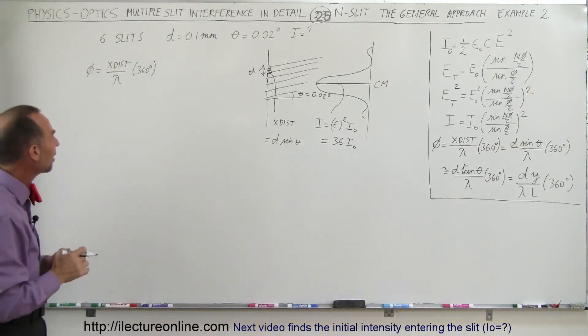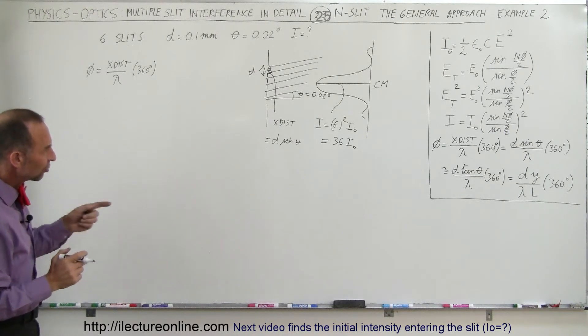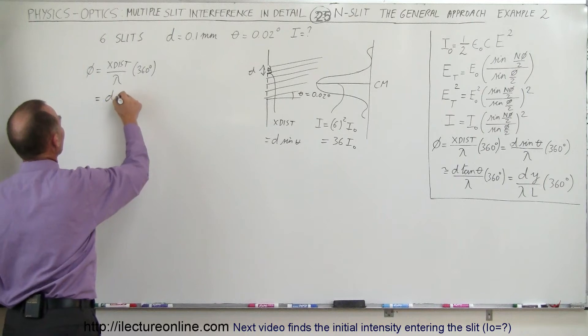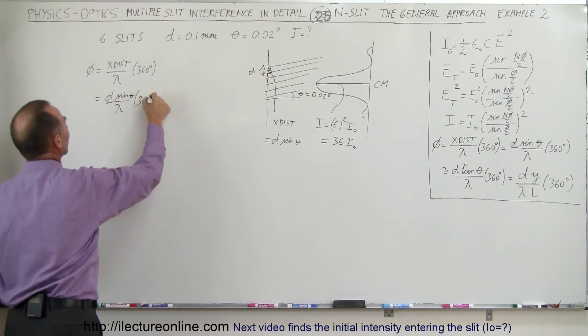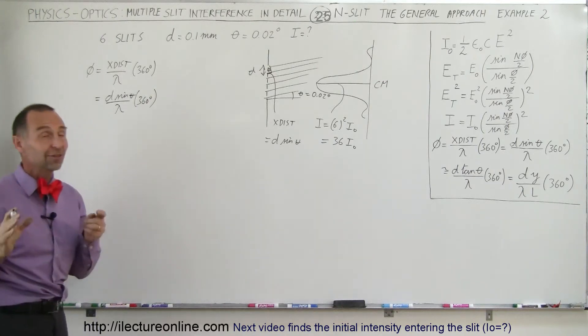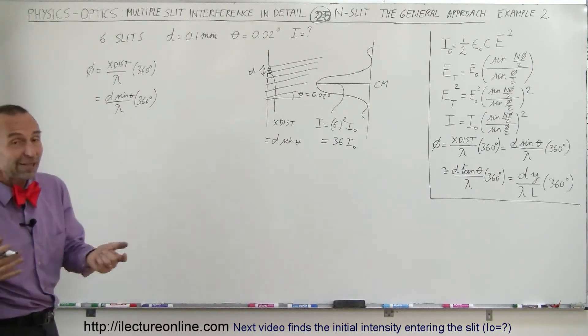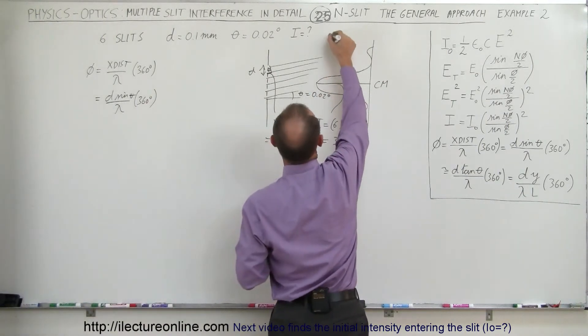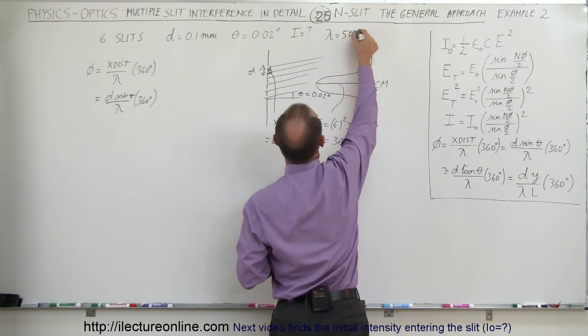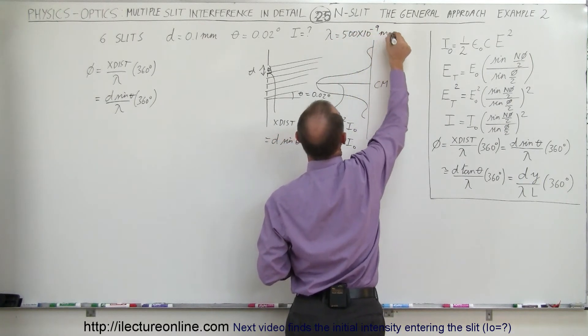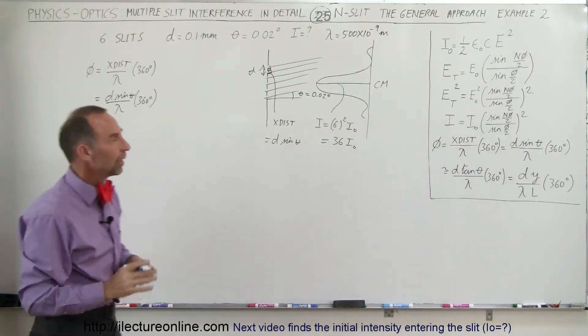It will be the fraction of a phase. Okay, the extra distance traveled, therefore, is equal to d sine theta divided by lambda times 360 degrees. I guess one more thing that we need in this problem is the wavelength. So let's say the wavelength is equal to 500 nanometers, which is 500 times 10 to the minus 9 meters, which is the typical wavelength for visible light.